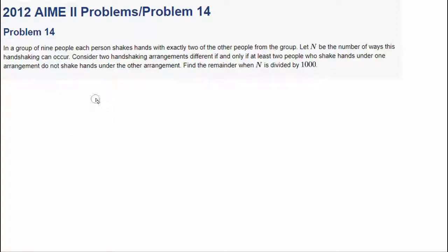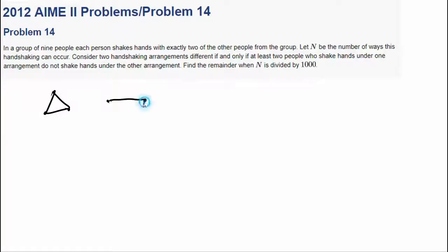So representing handshakes in terms of rings is very useful. Now we have to ask ourselves, how many rings can we have with nine people? And you have to remember, a ring has to have at least three people in it. It can't be just a line because you can't shake hands with the same person twice — you shake hands with exactly two other people. So it has to be at least three people per ring.